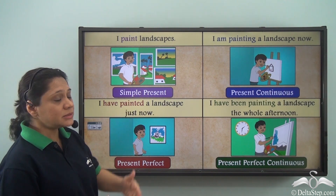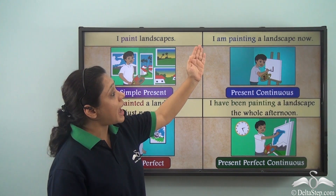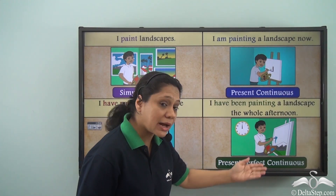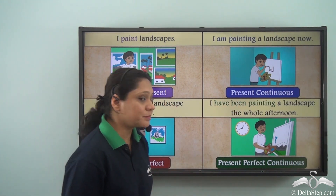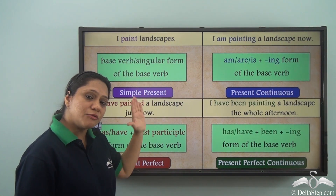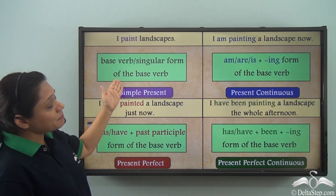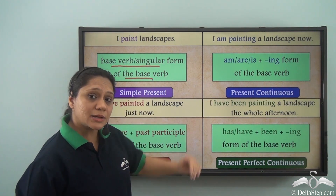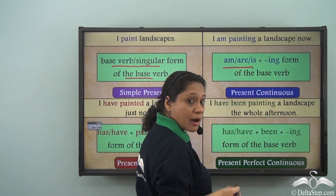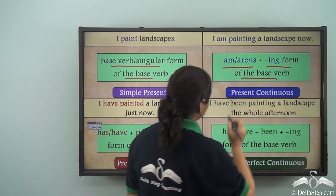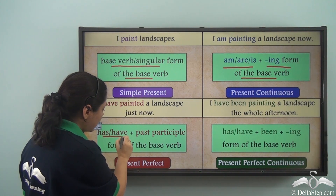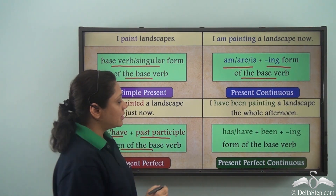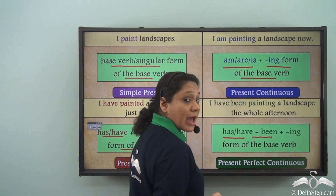We have four kinds of the present tense: in the simple present our verb is "paint," in the present continuous our verb is "am painting," in the present perfect our verb is "have painted," and in the present perfect continuous our verb is "have been painting." In the simple present tense it is the base verb or the singular form. In the present continuous we use am, are, or is with the -ing form. In the present perfect we use has or have with the past participle form.